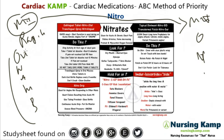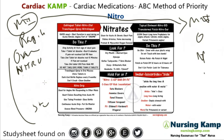In ONAMB: O is for oxygen, N is for nitro, A is for aspirin, M is for morphine, and B is for beta blockers. But today we're talking about nitro.